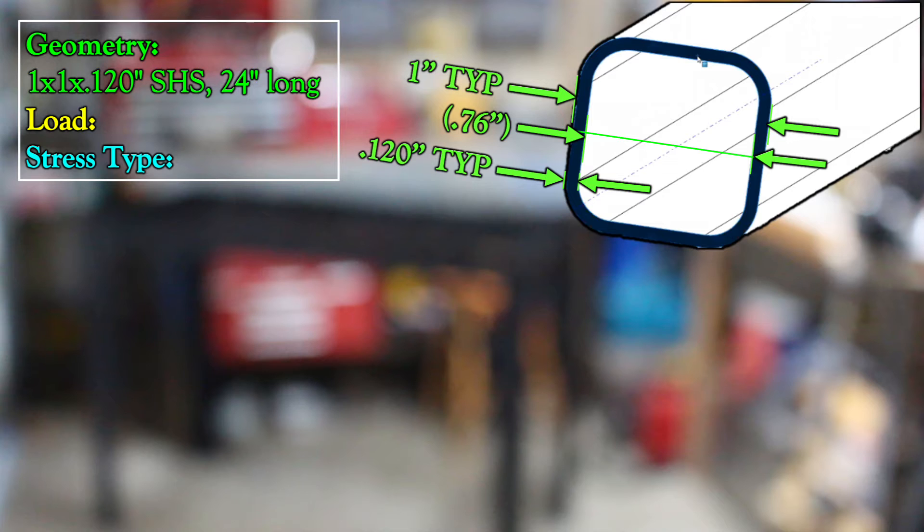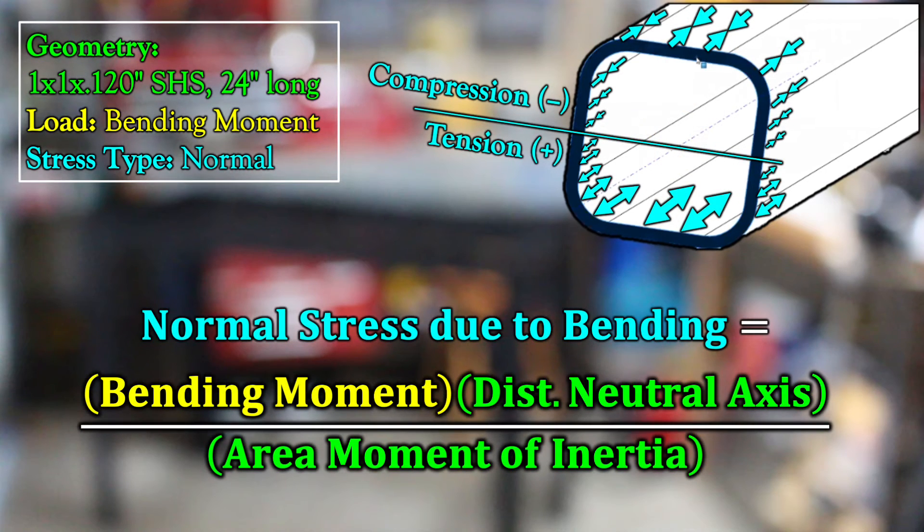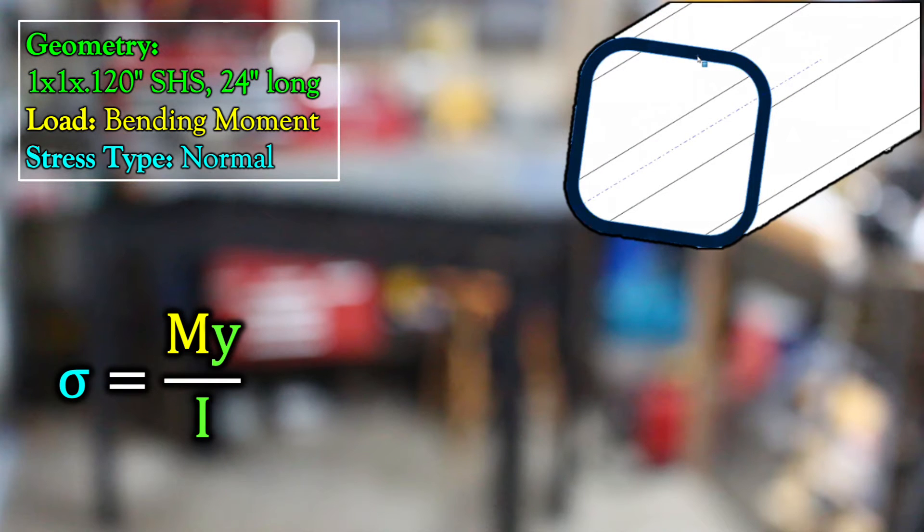The equation for stress depends on the type of reactionary load that you're analyzing. Let's look at the moment first. Stress due to bending is normal, that is perpendicular to your cross section, because the body is bending about an axis that's parallel with your cross section, compressing one side and putting the other side in tension. And it's equal to your load, your bending moment, multiplied by the distance from your bending axis, your neutral axis, to the point where you're analyzing, all divided by your area moment of inertia, your cross section's resistance to bending. Symbolically, that's sigma equals my over i.